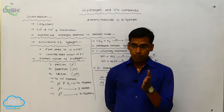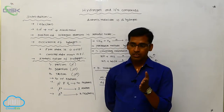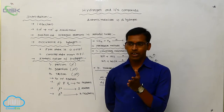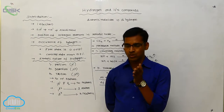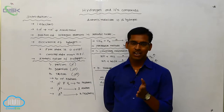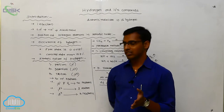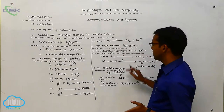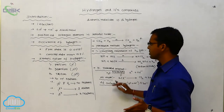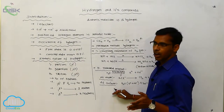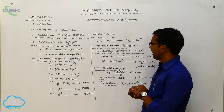During the preparation of NaOH, sodium hydroxide interacts with chlorine gas in a brine solution by the Castner-Kellner process, producing hydrogen gas. These are the preparation methods of hydrogen.